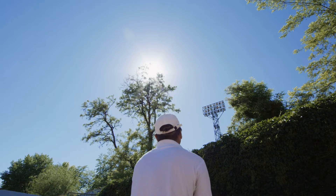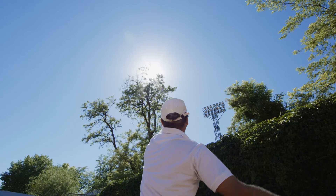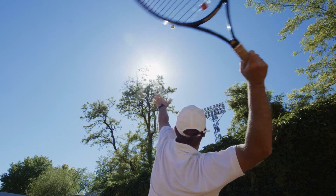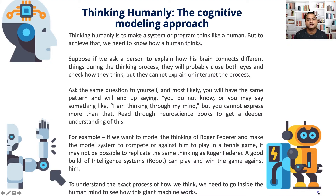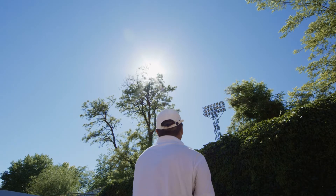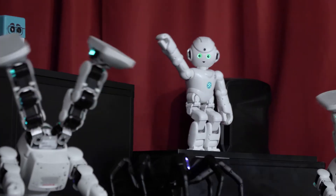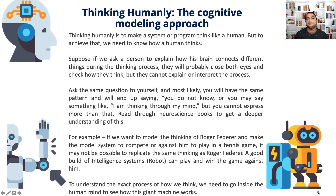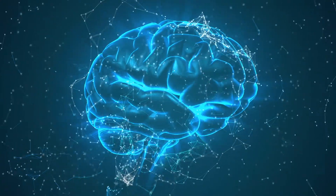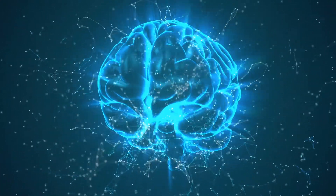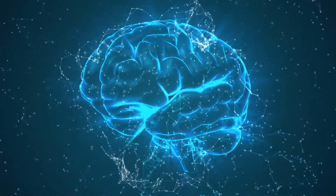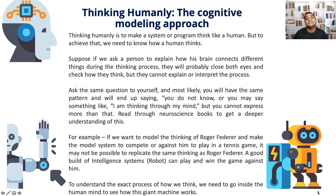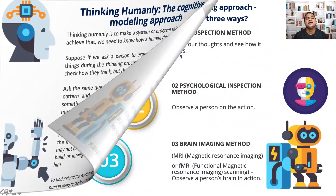For example, if you want to model the thinking of Roger Federer and make a model system to compete against him in a tennis game, it may not be possible to replicate the same thinking as Roger Federer. A well-built intelligent system — a robot — can play and win the game against him. To understand the exact process of how we think, we need to go inside the human mind to see how this giant machine works.